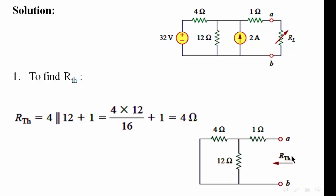We can see here there is no R-load. And cancel the voltage source and the current source. The voltage source is replaced by a short circuit, and the current source is replaced by an open circuit. As we can see here, there is no current source. In order to calculate the R-Thevenin, we need to start from the side that's opposite to the side of the removed load, which means this side.